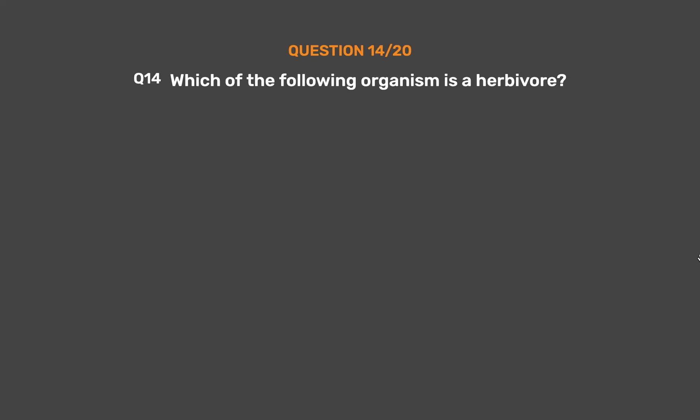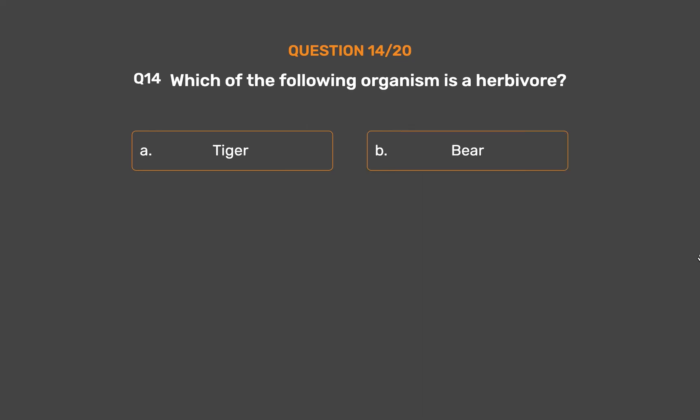Question number 14. Which of the following organisms is a herbivore? Option A, Tiger. Option B, Bear. Option C, Deer. Option D, Lion.